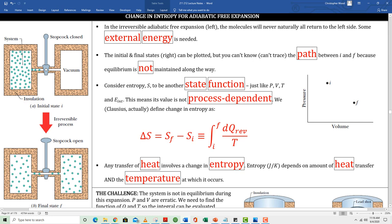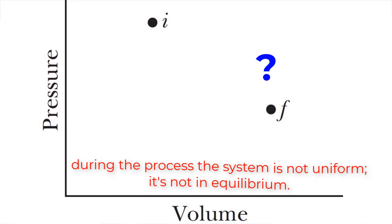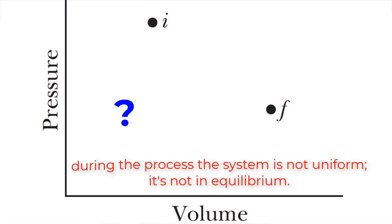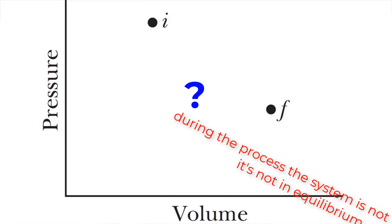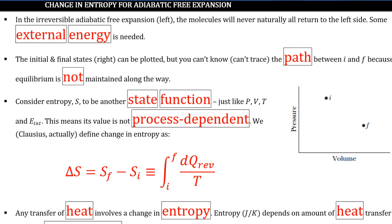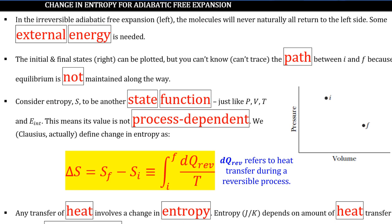Here's my problem: I can't make a PV diagram showing what happens as the gas spreads from the left to the right chamber. During this process there's no homogeneity or uniformity — pressure, volume, and temperature readings depend on where I take that reading, which precludes an accurate PV diagram. Because entropy is a state function — meaning it's path independent — I use the Clausius definition: the ratio of heat flow to temperature integrated along the path, with units of joules per Kelvin.